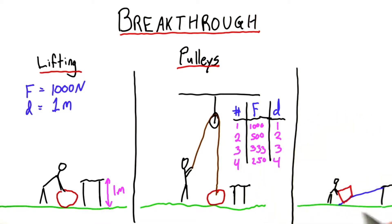If we used an inclined plane, if the angle was 30 degrees, we'd have to exert a force of 500 newtons over a distance of 2 meters.